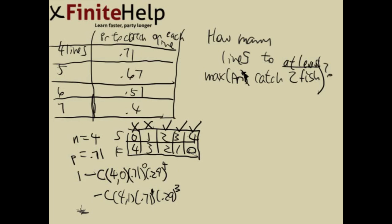And I'm not going to punch it out here. So you calculate this, and this is going to turn out to be some probability. So this is the probability of 4 lines catching at least 2 fish. So let's say you might write down the probability here.